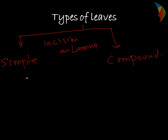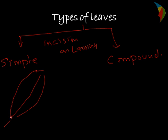In the case of simple leaves, the lamina is entire, and if incised, it does not reach the midrib. The lamina is complete, and in case it is incised, it does not reach the midrib portion — it is only on the top margin portion. In the case of compound leaf, the lamina is incised towards the midrib portion.